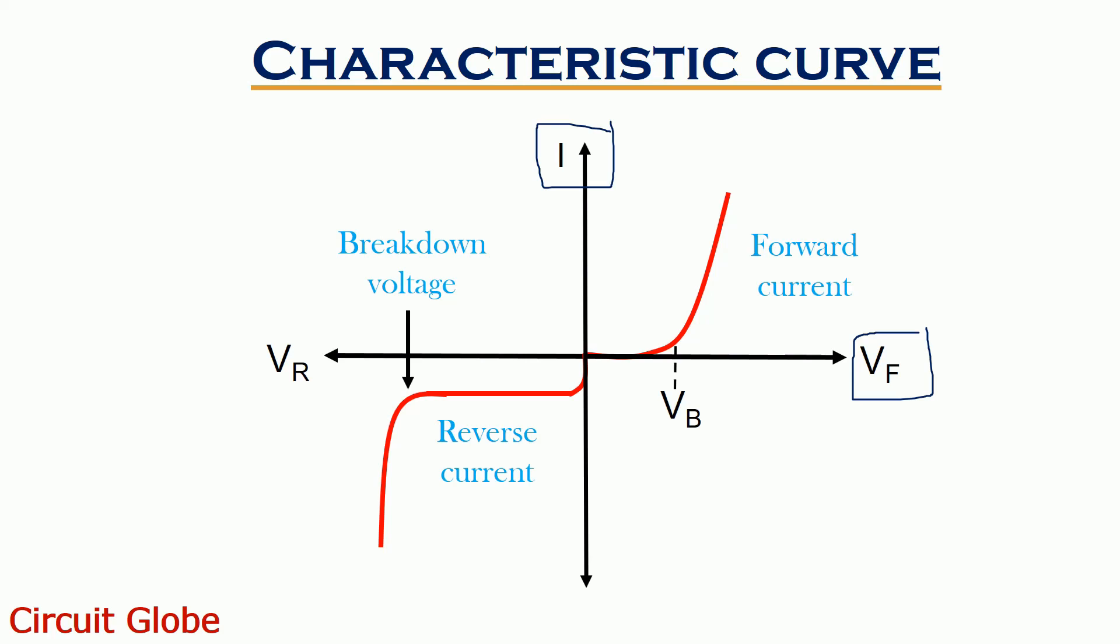As we can see, no current flows through the device until barrier potential is greater than the forward applied voltage. However, a rapid increase in current is noticed when barrier potential becomes less than the forward applied voltage.